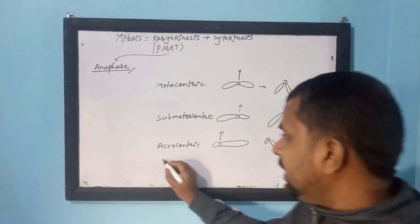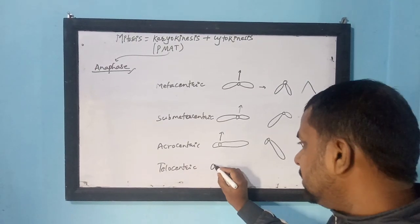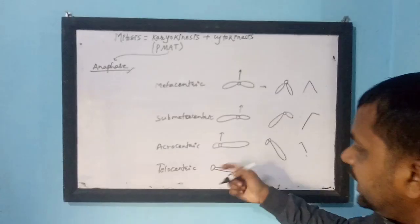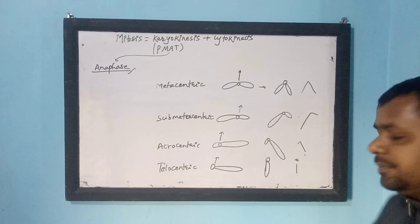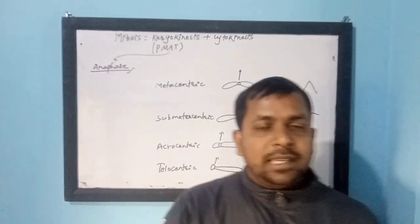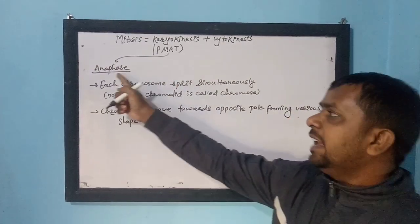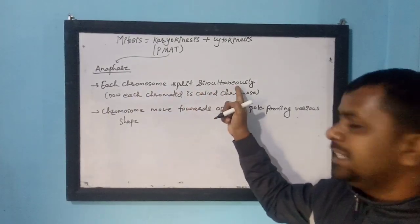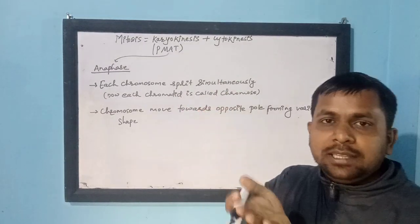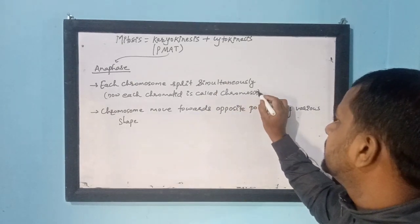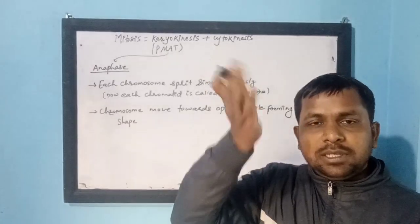If the chromosome is telocentric — centromere exactly at the end — when it is pulled it takes the form of an I-shape. Different shapes of chromosomes can appear during anaphase. To conclude anaphase: each chromosome splits simultaneously, each chromatid is now called a chromosome, and these chromatids move towards the opposite poles forming various shapes.